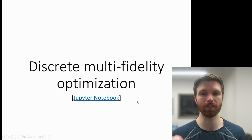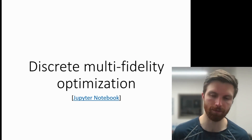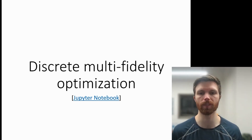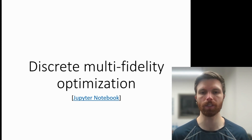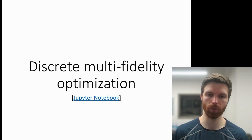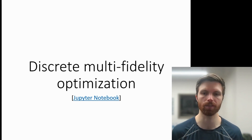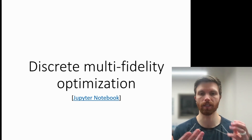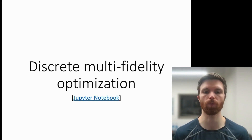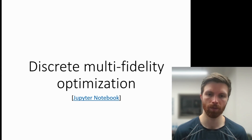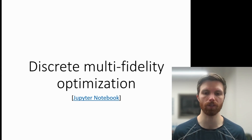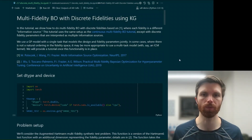Next, we'll talk about discrete multi-fidelity optimization. This will be purely in BoTorch, as it's not currently implemented in the Ax framework. So you have to move to some of the lower level building blocks here.